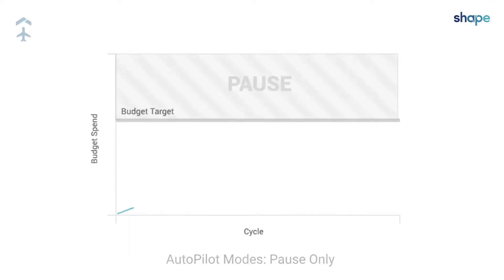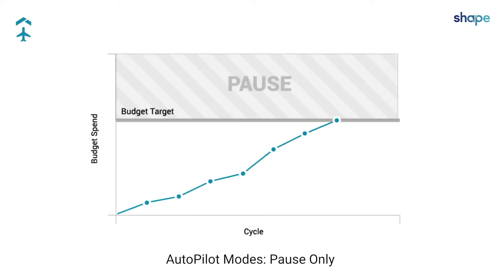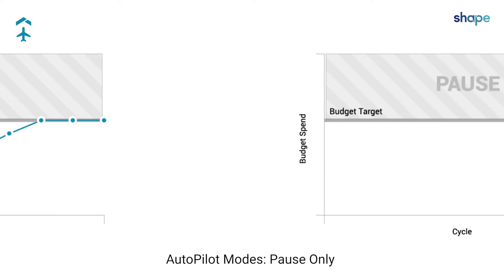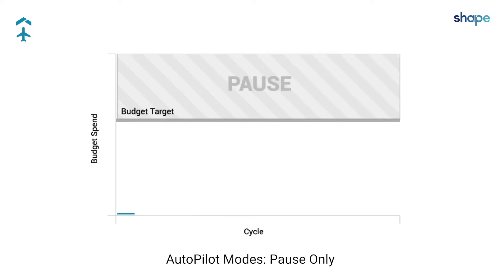The Pause Only mode will pause your advertising campaigns when the sum of spend reaches your budget target. When a new cycle is entered, you will be responsible for activating campaigns. In no case will this mode ever automatically activate your campaigns.